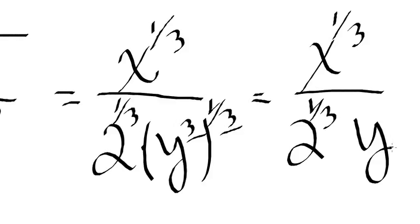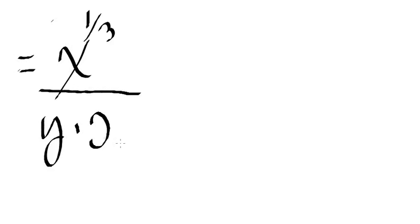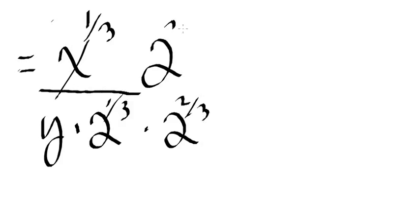Yeah, we gotta do something with this two to the one-third down here in the denominator. Let me just go back and rewrite. Let's just rewrite this here. We have X to the one-third over Y times two to the one-third. So we're gonna multiply by two to the two-thirds. All right, to the two-thirds. We're doing the denominator, we got to do in the numerator.